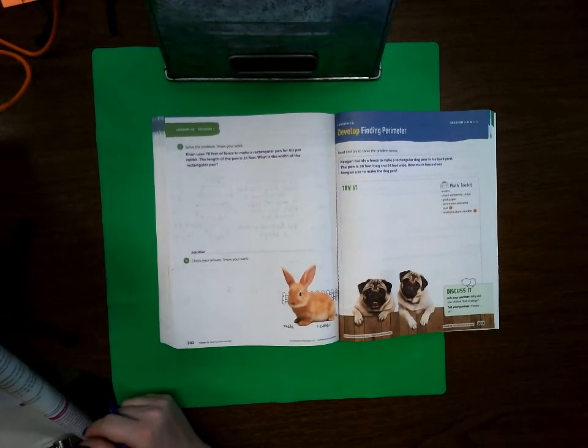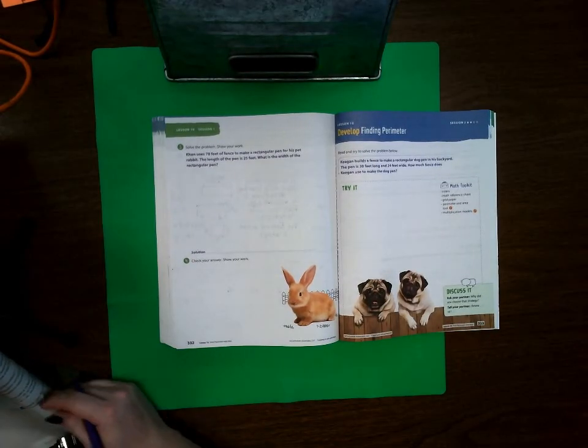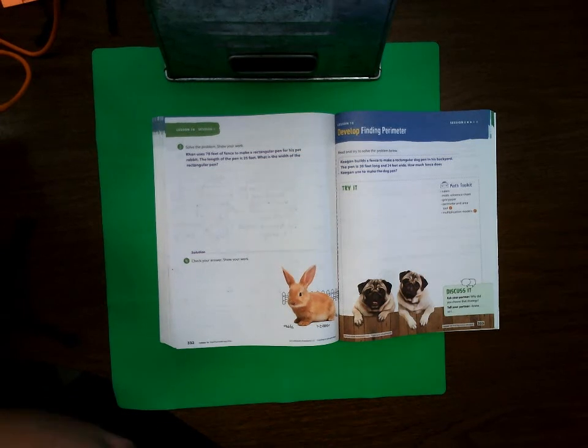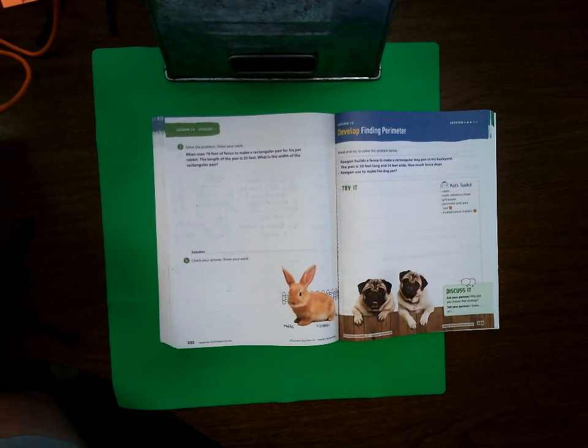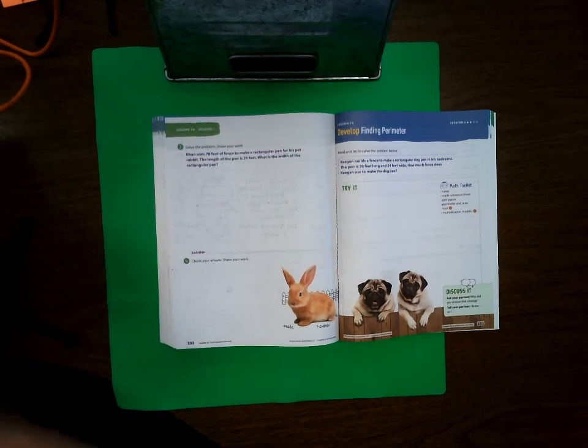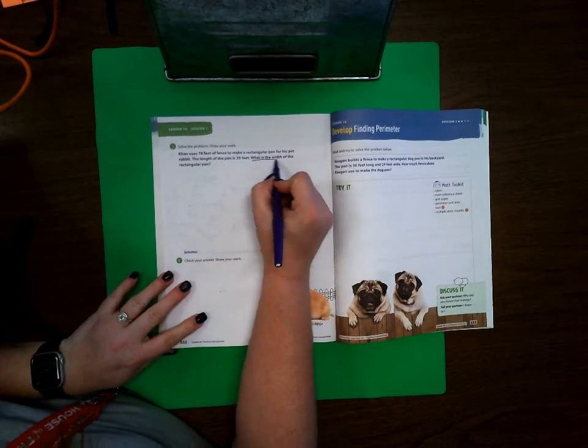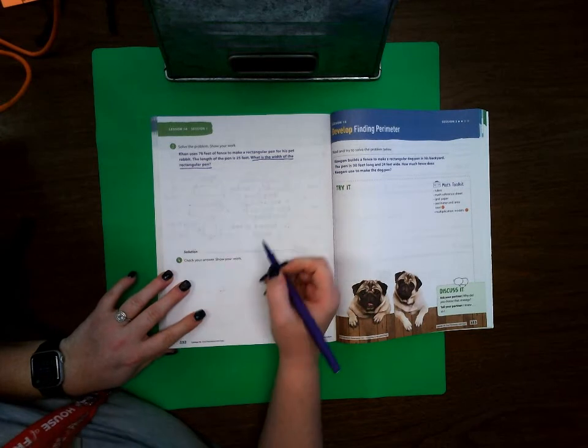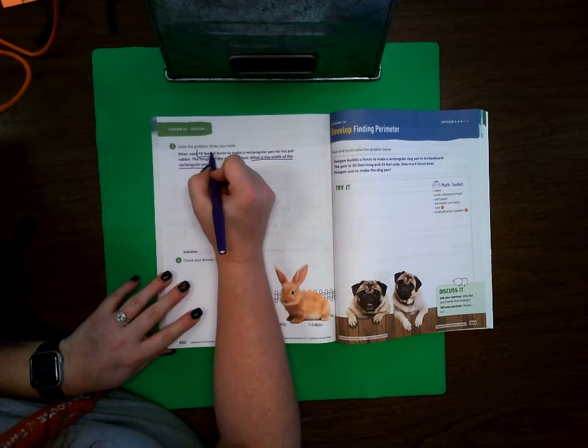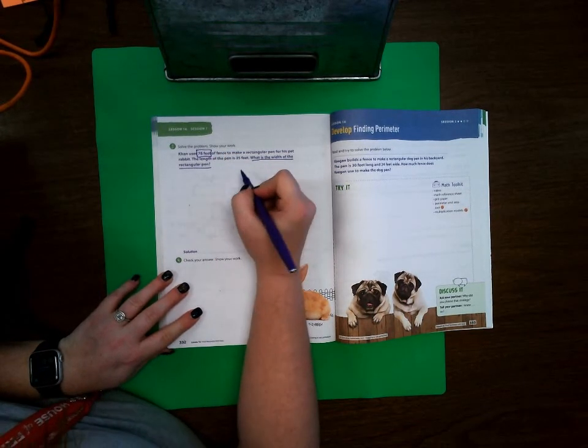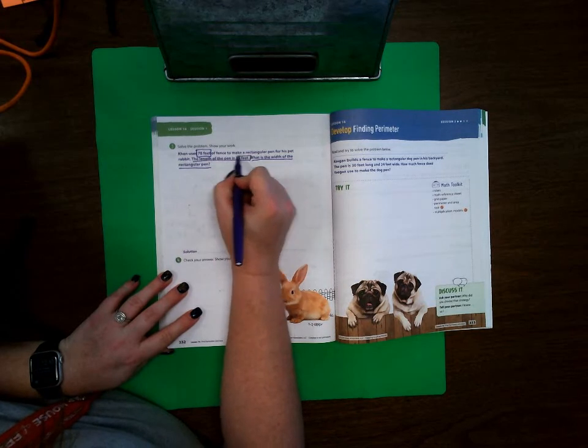Con uses 76 feet of fence to make a rectangular pen for his pet rabbit. The length of the pen is 25 feet. What is the width of the pen? The rectangular pen. Okay, so we've got 78 feet of fence and the length is 25 feet.